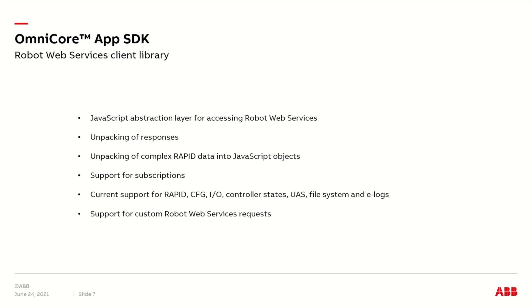The Robot Web Services is a quite extensive API, and not all parts of it are covered by the client library. Currently, there is support for RAPID, CFG, IO, various controller states, UAS, file system access, and ELogs. Should the more rarely used parts of Robot Web Services be required, there is also support for making custom requests.